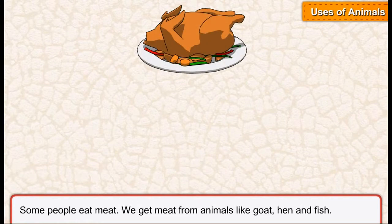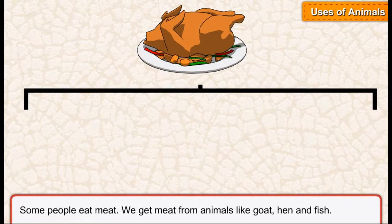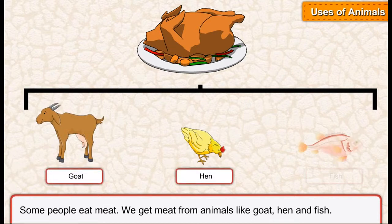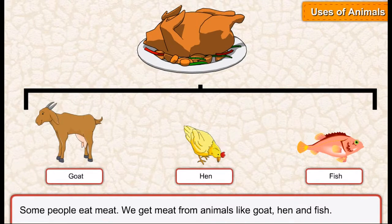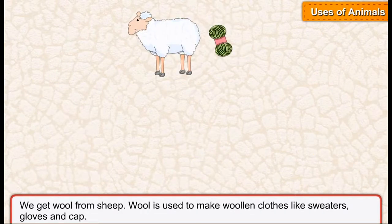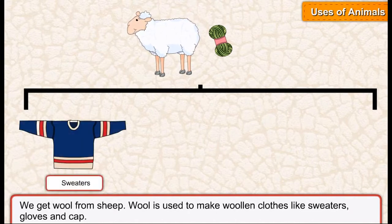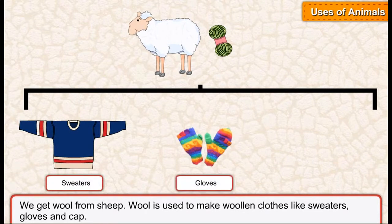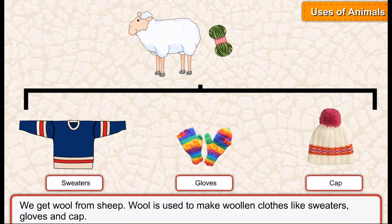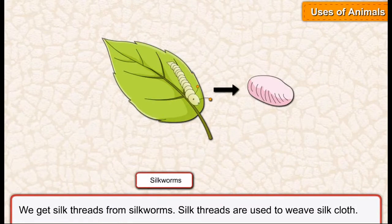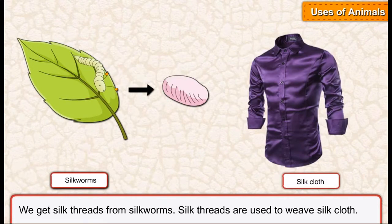Some people eat meat. We get meat from animals like goat, hen, and fish. We get wool from sheep. Wool is used to make woolen clothes like sweaters, gloves, and caps. We get silk threads from silkworms. Silk threads are used to weave silk cloth.